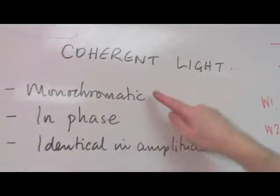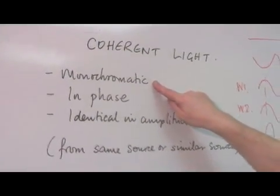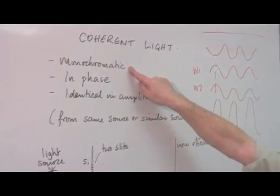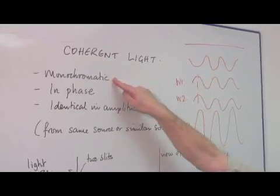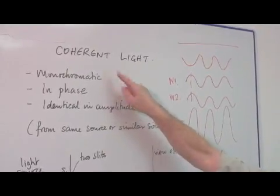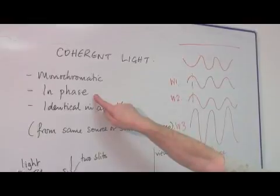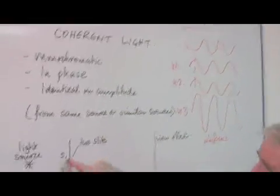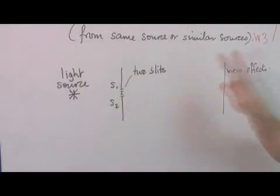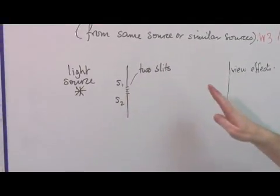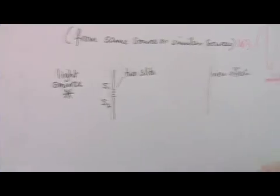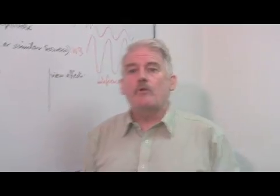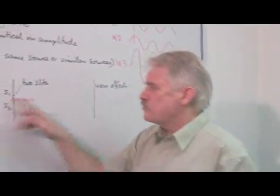The conditions: first of all, monochromatic, one coloured, one wavelength. So if it's yellow, it is exactly the same yellow. It's not just yellow, it's the same yellow. One wavelength. They are in phase. They start together at the same point. So from this source and from this source, I've got to have them starting exactly the same. And they've got to be the same in size. And the fact is, the only way we can do this is produce them from one source. And that is what we do here.